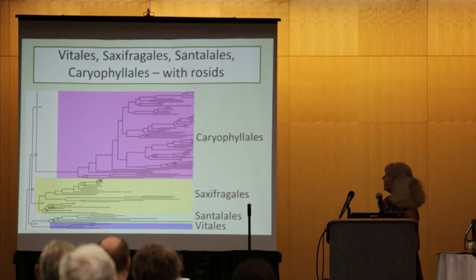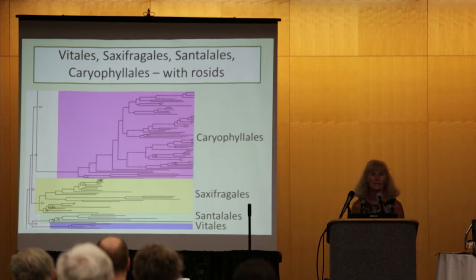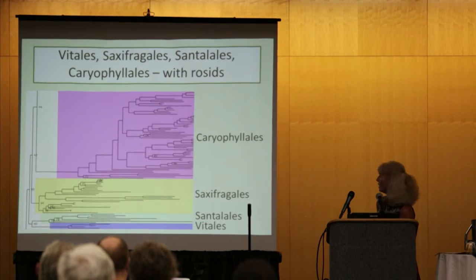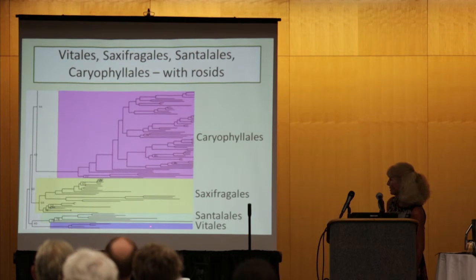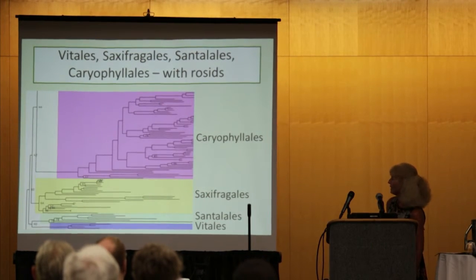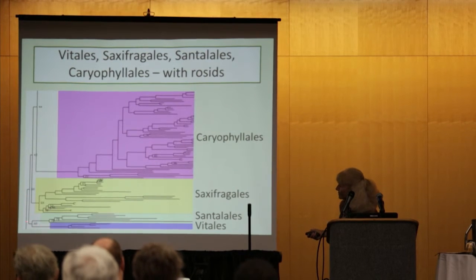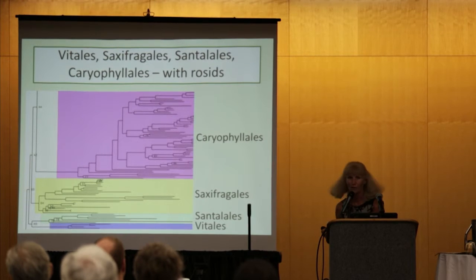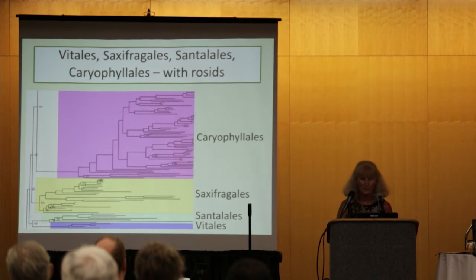Moving into the eudicots, there have been questions about the placements of Vitales and Saxifragales relative to the rest of the rosids. Very interestingly, in this particular tree, we actually have Santalales and Caryophyllales appearing at this point. We see a clade formed with Vitales and Santalales together, then Saxifragales are next, and then Caryophyllales is actually sister to the rest of the rosids. The bootstrap values here are all quite low, so despite these clades being well resolved as monophyletic, the relationships among them are not well supported.